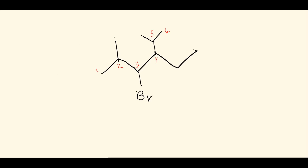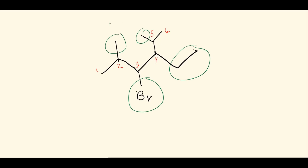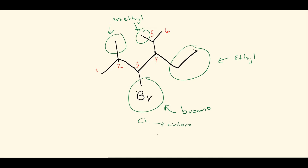Now we identify all four substituents: two methyls, one ethyl (two carbons), and one halogen — a bromide. When a halogen is attached to an organic molecule we use the -o ending: bromide becomes bromo. Similarly, chlorine would be chloro, and iodine would be iodo.